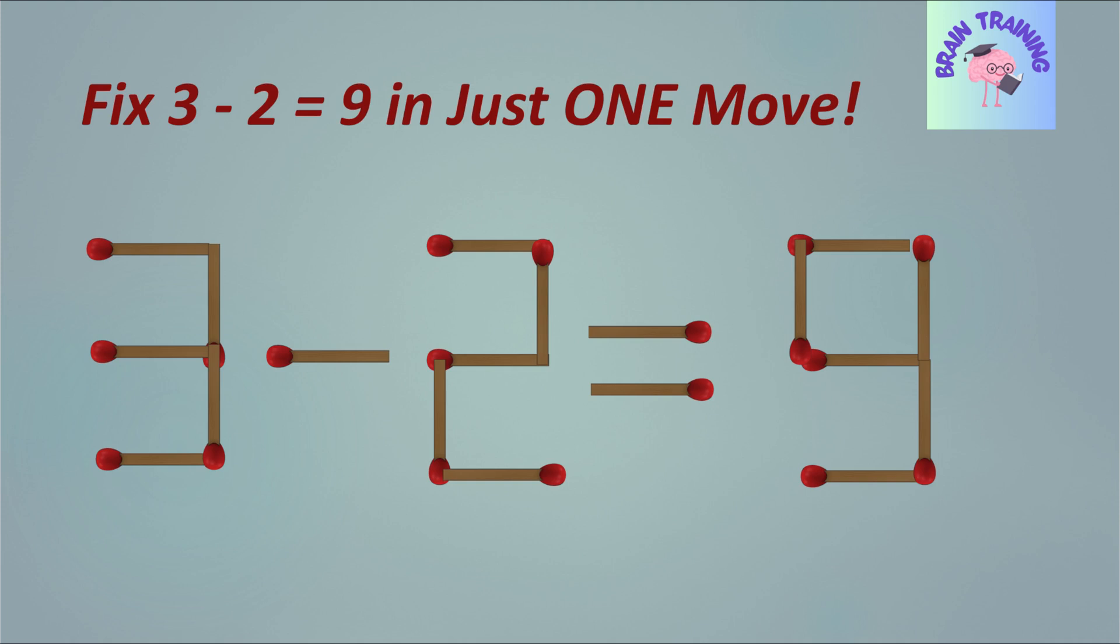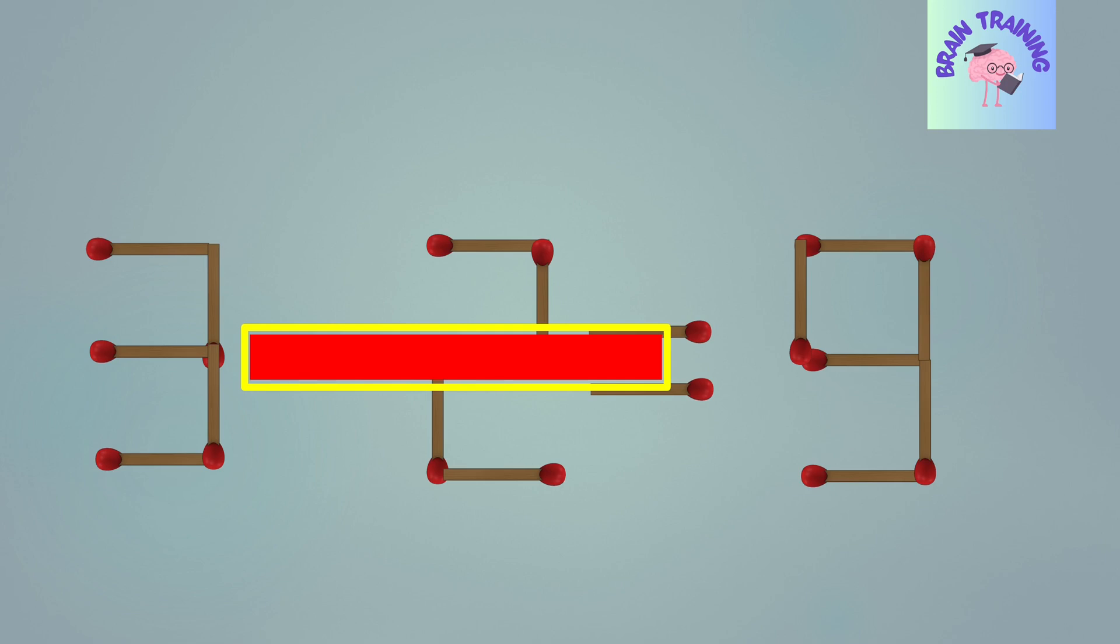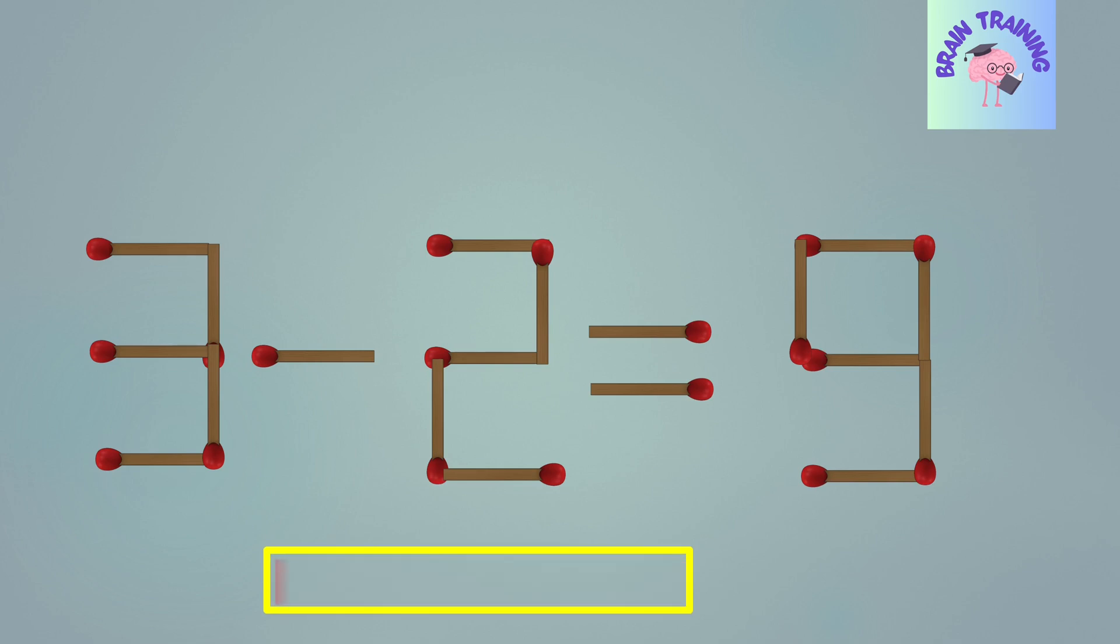The current equation is three minus two equals nine, and it's easy to spot the mistake. You will have 15 seconds to solve this puzzle. If you're ready, let's begin. You'll see the correct answer in 15 seconds.